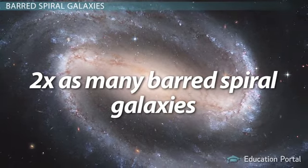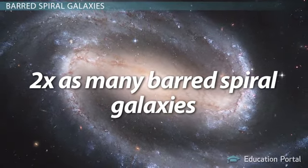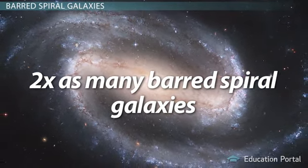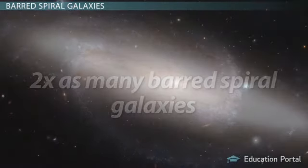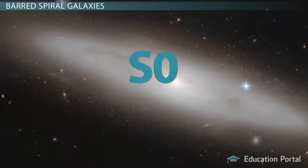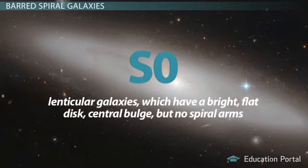As a final end note, there are galaxies called S0 galaxies, or lenticular galaxies, which have a bright, flat disk and central bulge but no spiral arms. They are sort of a middle ground between elliptical galaxies and spiral galaxies.